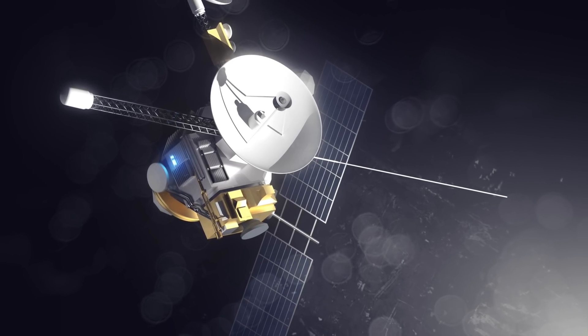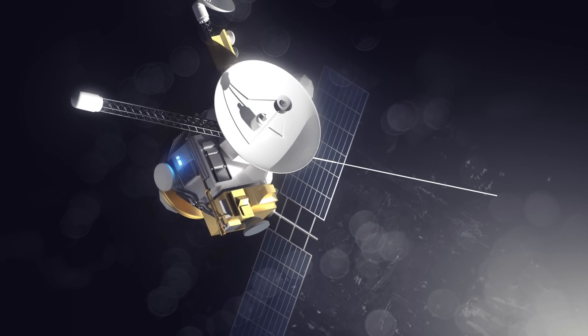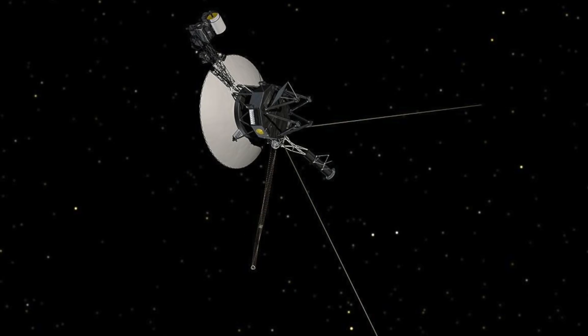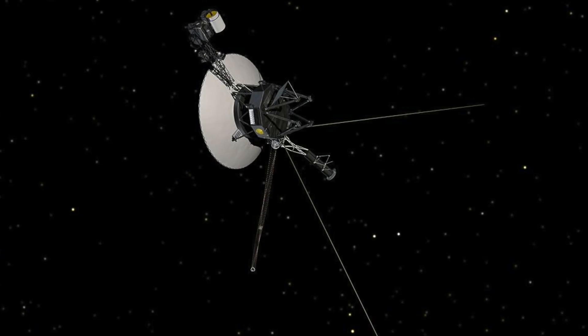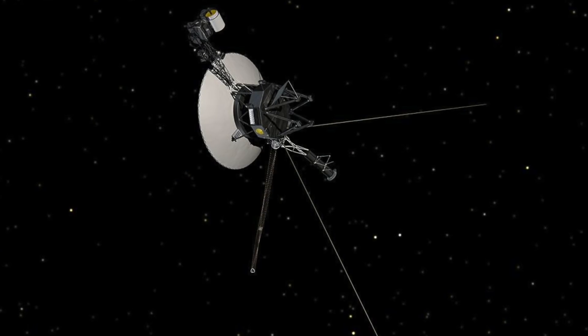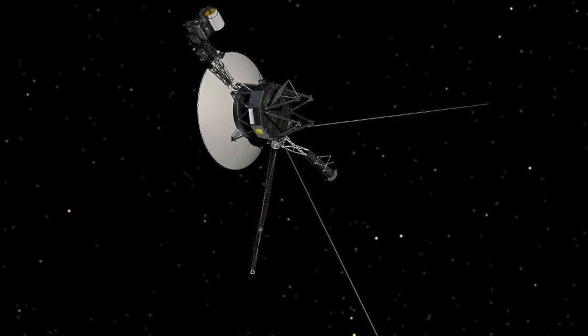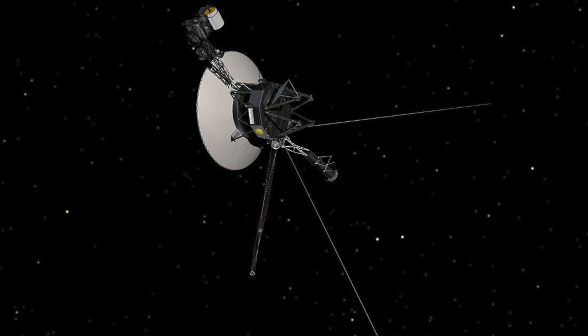A NASA spacecraft has detected a loud scream in space. The ominous noise was detected by Voyager 1, a space probe that is currently over 14.1 billion miles away from Earth and is moving at around 38,000 miles per hour.